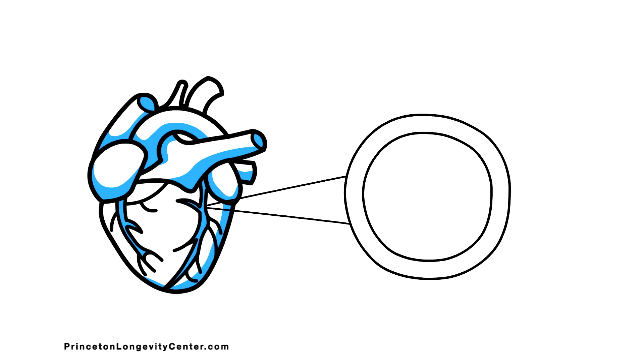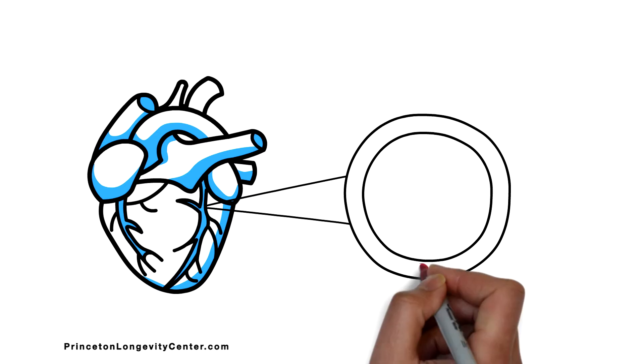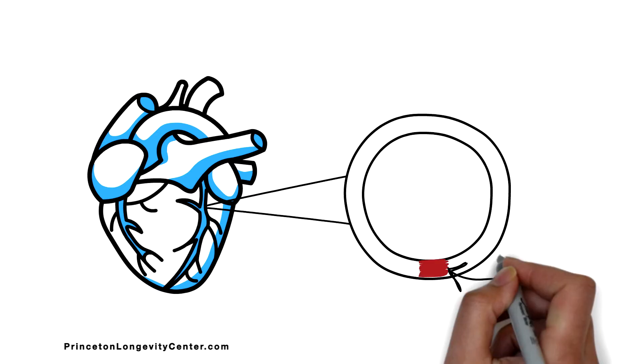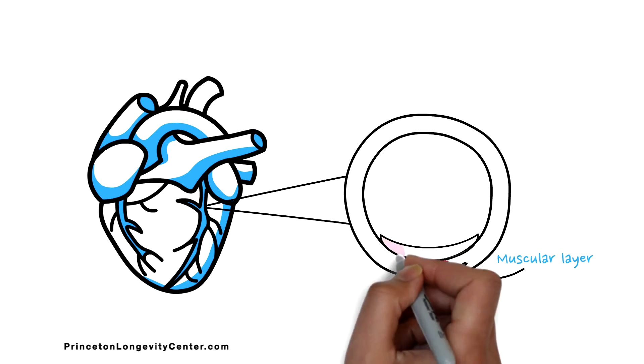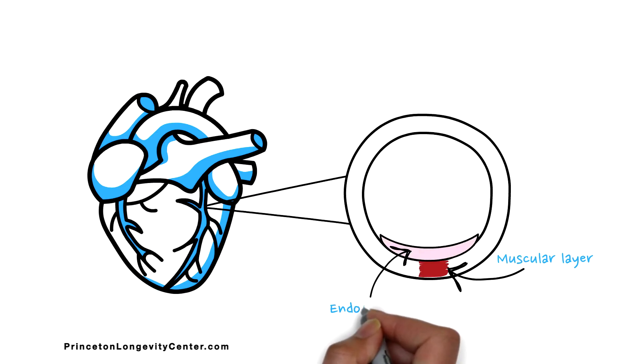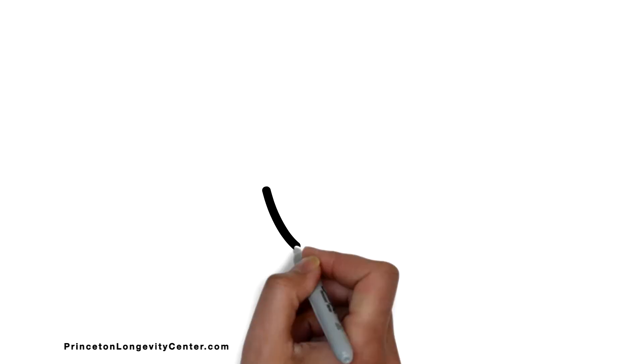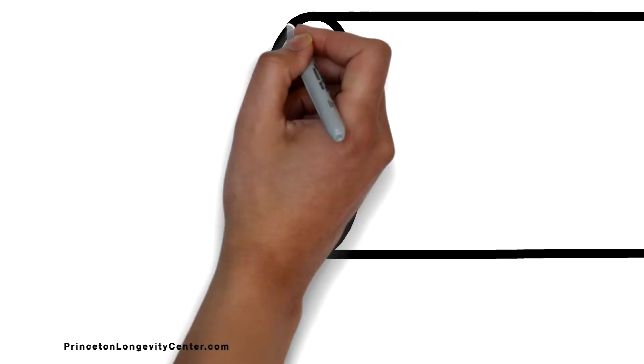Coronary arteries are comprised of a muscular layer on the outside, which helps the vessel constrict and relax, and a thin endothelial layer on the inside. When viewed from a different perspective here, we can clearly see the coronary vessel wall.